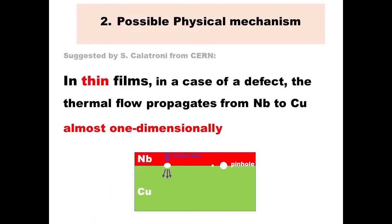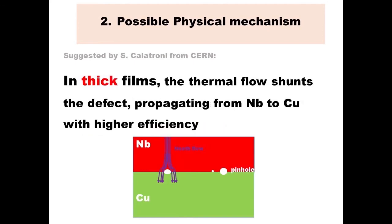The second possible physical mechanism was suggested by Sergio Galatroni from CERN. He argues that in thin films with a defective interface, thermal flow propagates unidimensionally because the thickness is very small, and so it is blocked by the defect. In thick films, the thermal flow is more tridimensional, so it shoots around the defect, propagating from the top niobium layer through the copper interface to the helium with much higher efficiency.